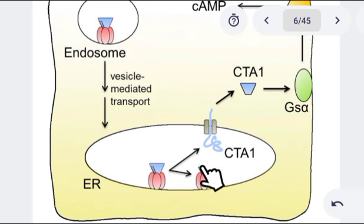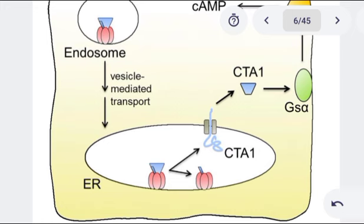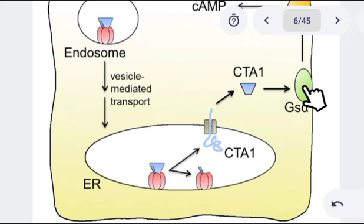The A2 domain will remain bound to the B subunit. The cholera toxin A1 is going to be separated and taken to the outside of the endoplasmic reticulum. Outside, we have got this G protein. If you remember the G protein, it has actually three subunits: the G alpha subunit, the G beta subunit, and the G gamma subunit.